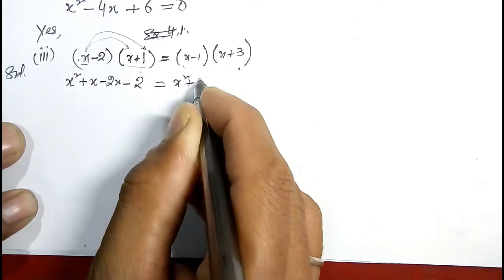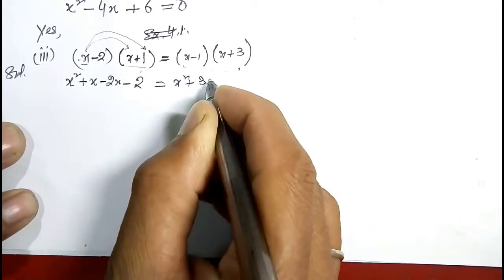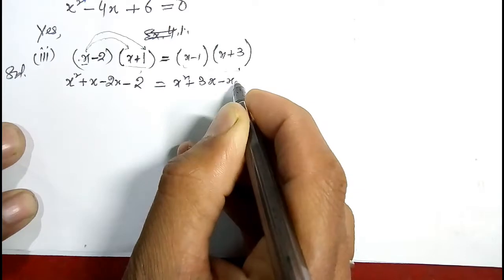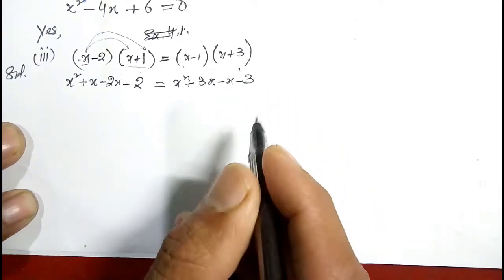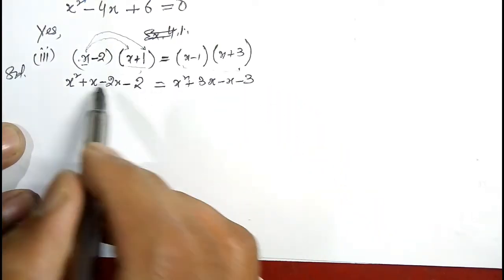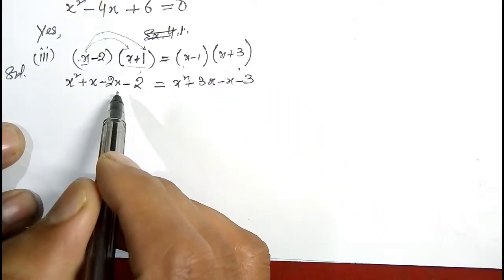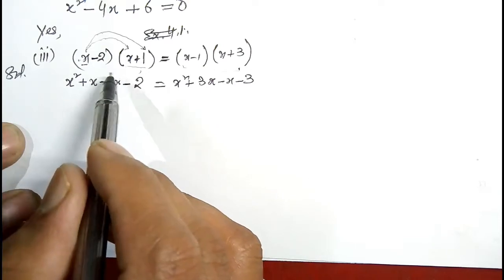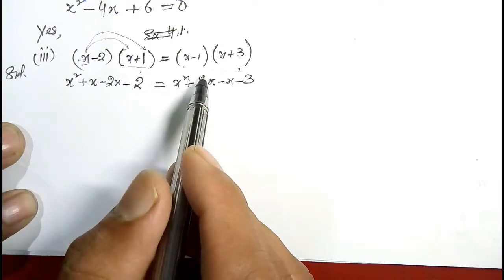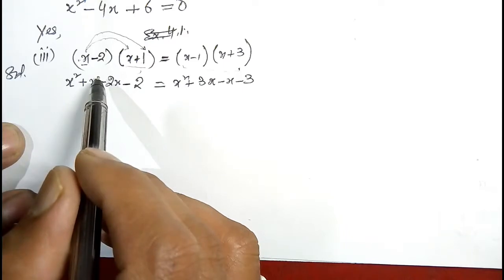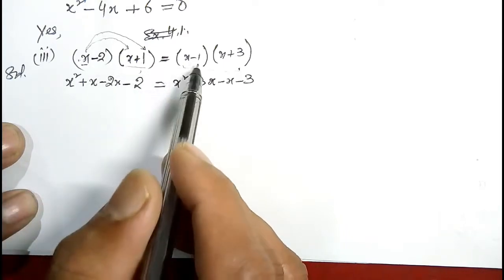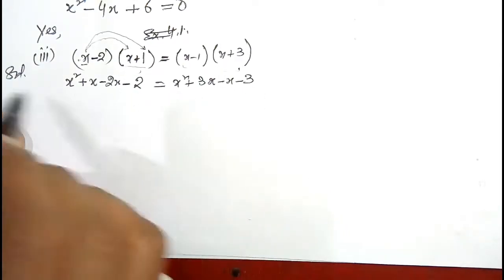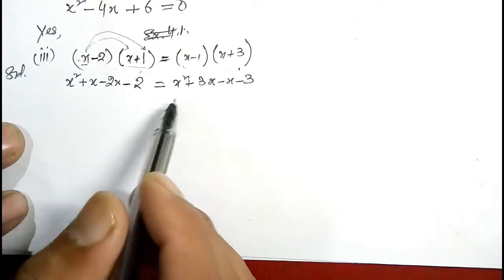For the right hand side, using the same multiplication procedure, this gives x squared plus 3x minus x minus 3. I multiply the two terms on the right hand side directly by the same procedure.